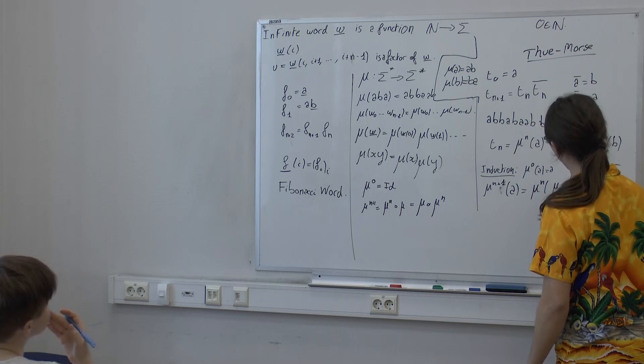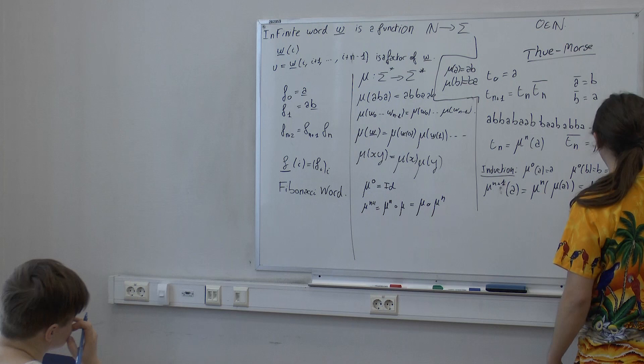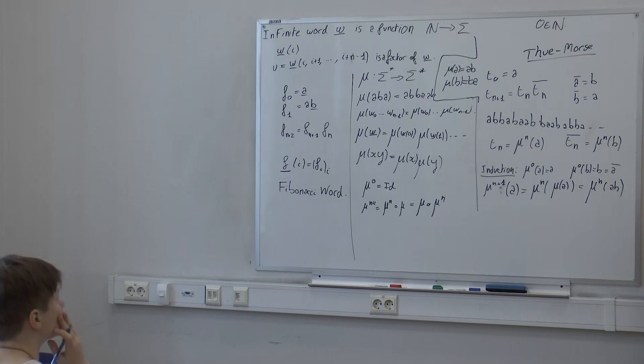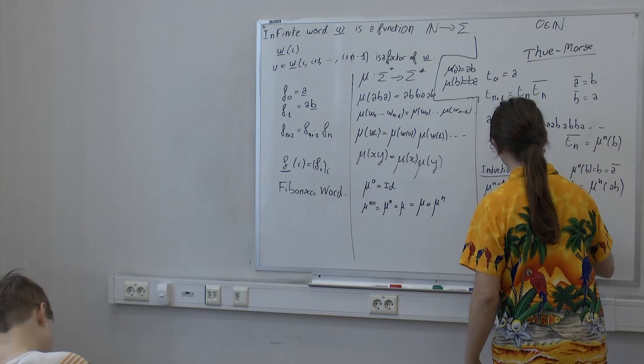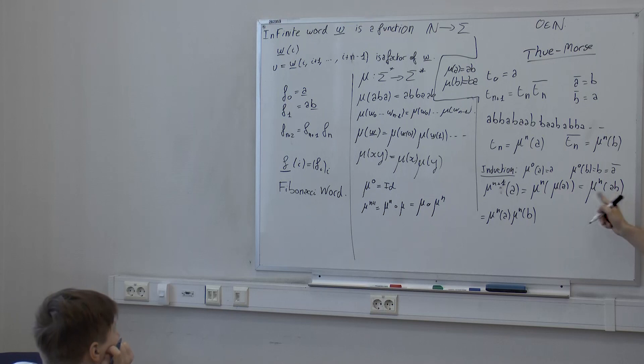Does this converge for any morphism? No — for this to be well defined, you should ensure the underlying sequence converges. I will give conditions for this — tell you which morphisms are nice and allow you to check this immediately.